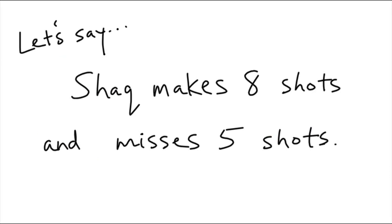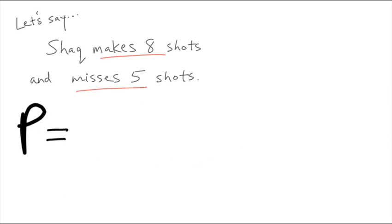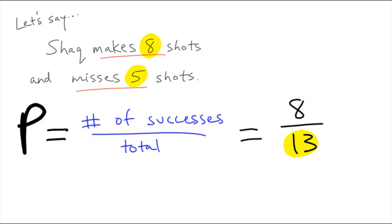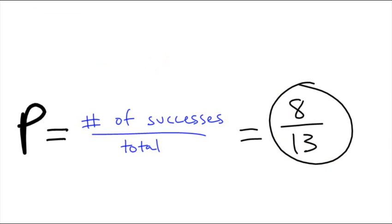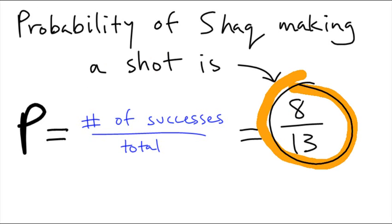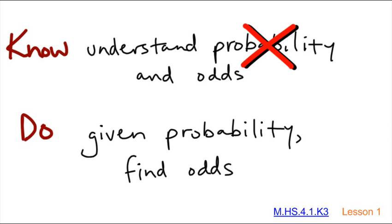Let's say Shaq makes 8 shots and he misses 5 shots. So his probability, which is successes out of the total, would be 8 out of 13, because it's 13 total shots. The probability of Shaq making a shot is 8 out of 13. So that was probability.